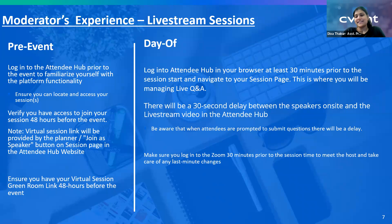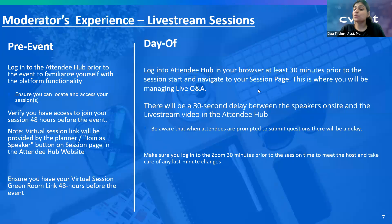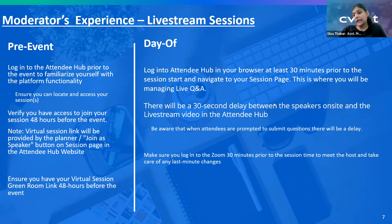Coming to that delay — you as a host play a very important role, and as a moderator as well. Since you are the host, you will be going ahead and starting the live stream. When you click on 'more,' the option you get is 'live on custom live streaming' — select that option. As soon as you hit the live stream option, it shows up immediately. However, it takes 30 seconds to be displayed in the Attendee Hub website.